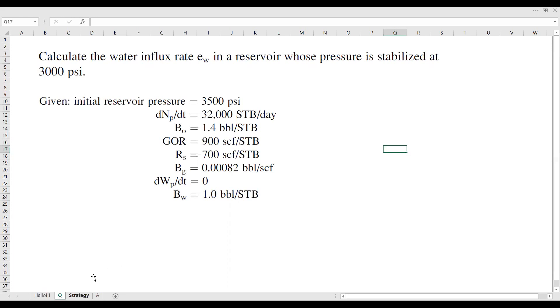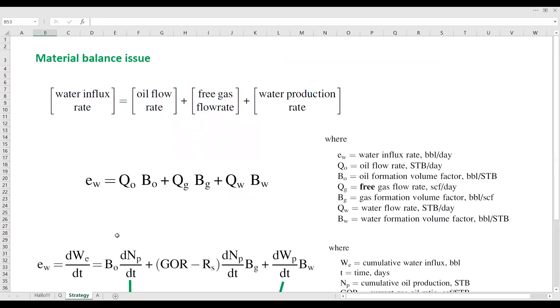Okay, and we also have the strategy to solve the problem. First, we need to realize that this is a material balance issue, and we need to also define that the water influx rate equals to the summation of oil flow rate, free gas flow rate, and water production flow rate.